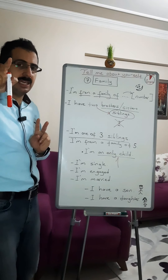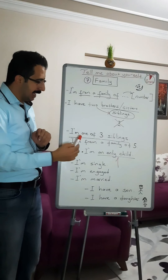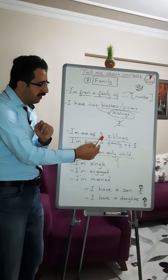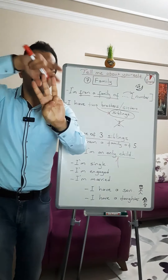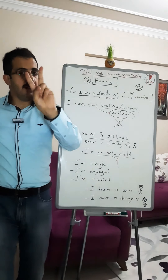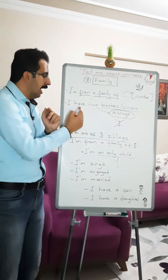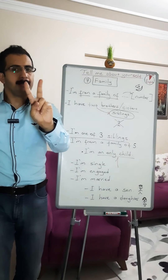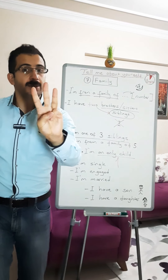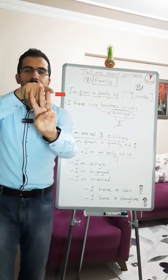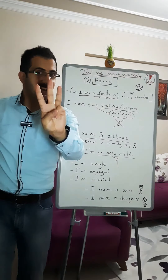If you want the count to include yourself, you can say: 'I am one of the three siblings.' That means: I, my brothers or my sisters — we are three.